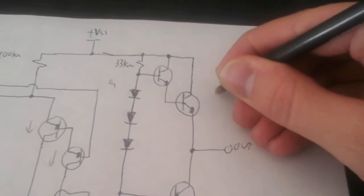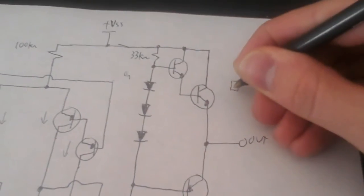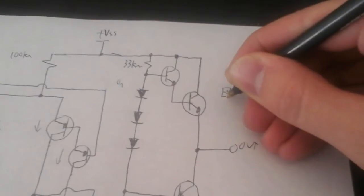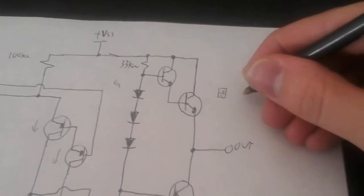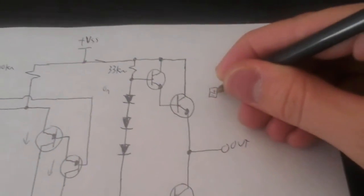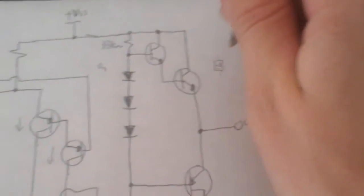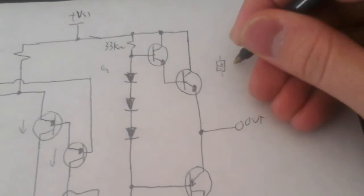So, take, say this is positive, negative, which is a diode, right? And this right here is a transistor.